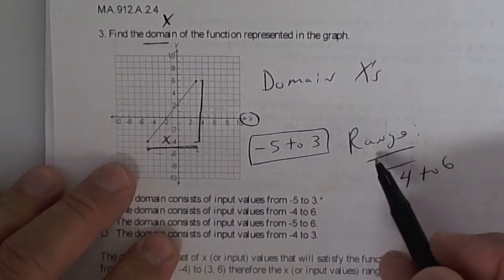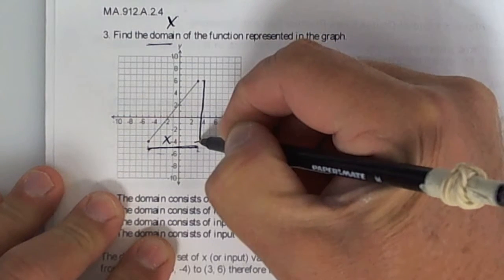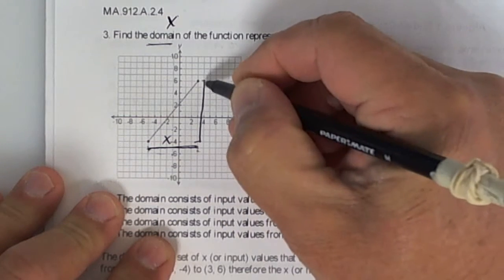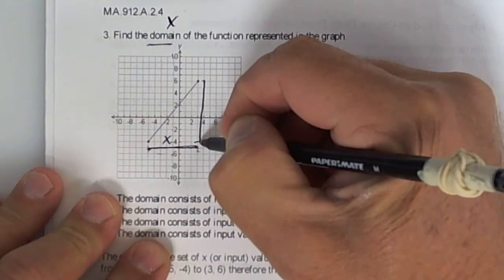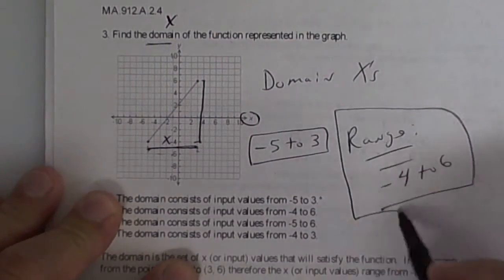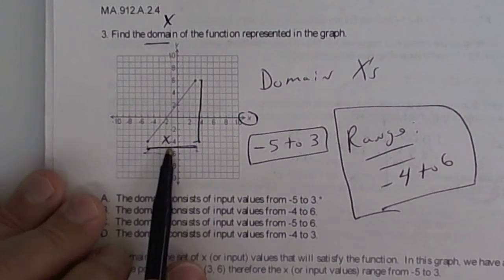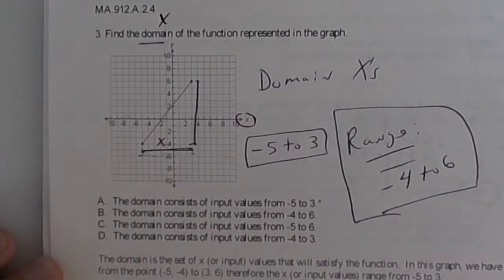If they say what is the range, then that is from the top to the bottom. So it looks like from the top to the bottom, it looks like it goes from, or bottom to the top, it looks like it goes from negative 4 all the way up to 6. So make sure you understand. Domain is the sideways, which is your x, and your range is the up and down, which is your y.